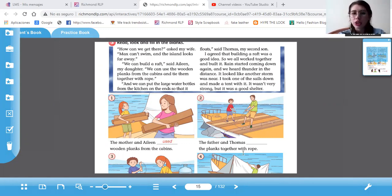Number two, the father and Thomas encuentran aquí el nombre de Thomas. The plants together with rope. ¿Dónde viene eso? Ah, acá. Together with rope. Tie. En pasado le agregamos una de y es atar, que amarraron.